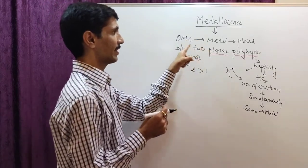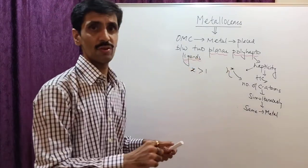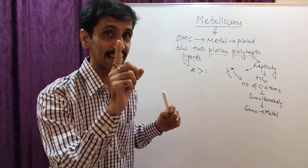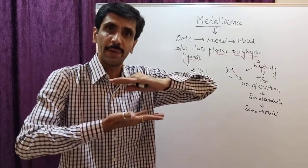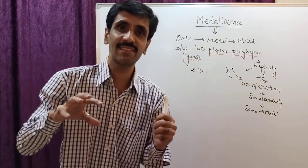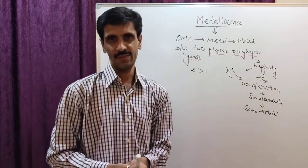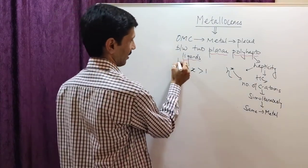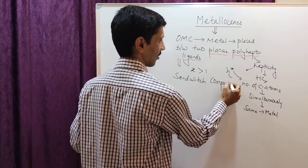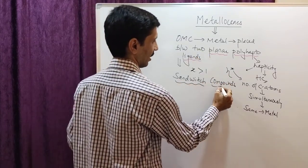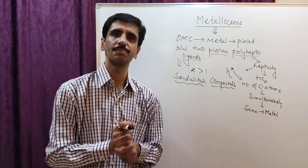A metal is placed between two planar poly-hapto ligands. Consider the planar poly-hapto ligands as slices of bread — one below the plane and one above the plane. Now when there are two slices of bread and you consider the metal as vegetables in between the two, it's a sandwich! And therefore we are also going to call these compounds as sandwich compounds.